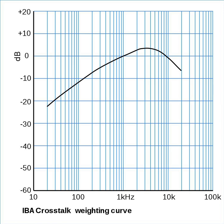In wireless communication, crosstalk is often denoted co-channel interference, and is related to adjacent channel interference. In integrated circuit design, crosstalk normally refers to a signal affecting another nearby signal. Usually the coupling is capacitive and to the nearest neighbor, but other forms of coupling and effects on signals further away are sometimes important, especially in analog designs. See signal integrity for tools used to measure and prevent this problem, and substrate coupling for a discussion of crosstalk conveyed through the integrated circuit substrate.